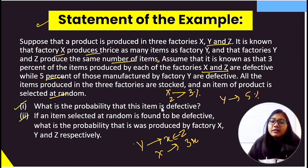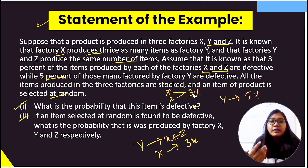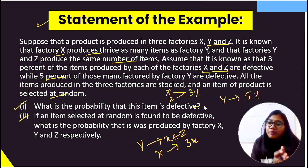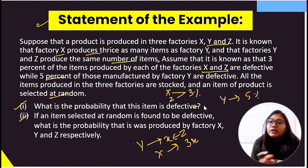The question has two parts. Part one: what is the probability that a randomly selected item is defective? Part two: if an item selected at random is found to be defective, what is the probability that it was produced by factory Y and Z respectively?